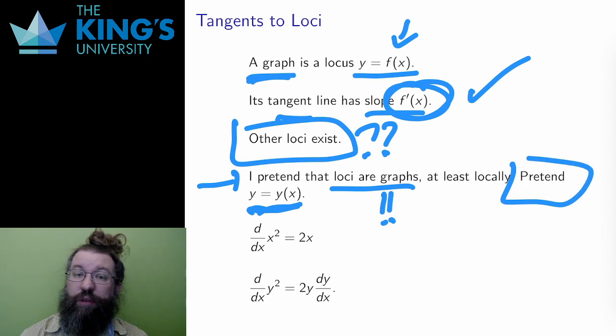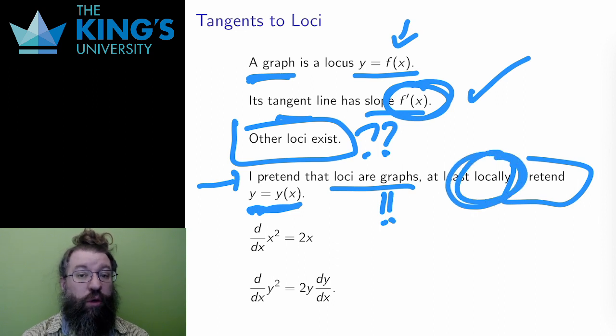And it might not be true everywhere, but it may be true even for just a small piece of the locus. The mathematical term for such a thing is locally, and locally the pretense might work.